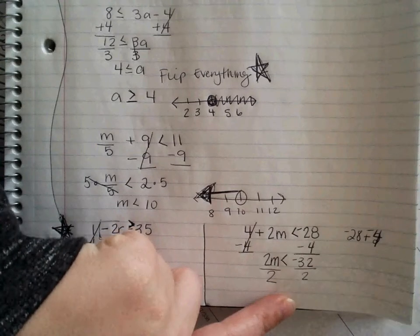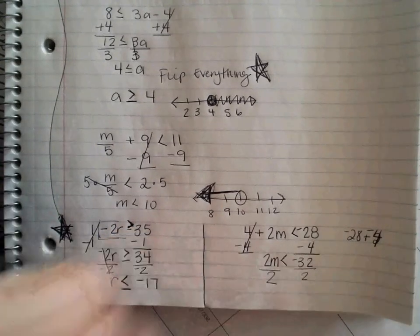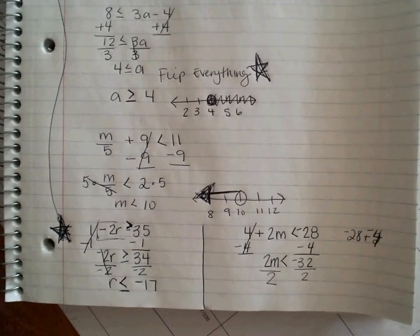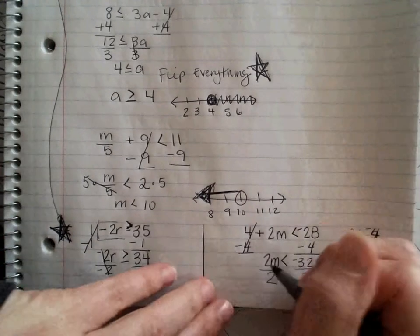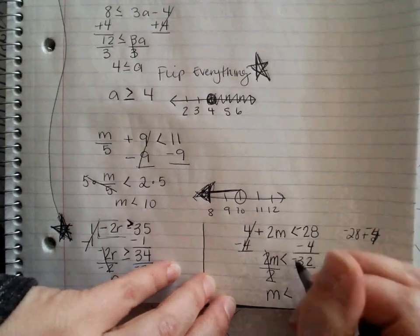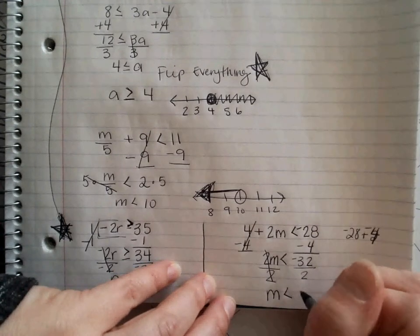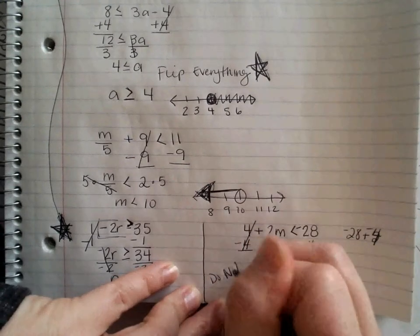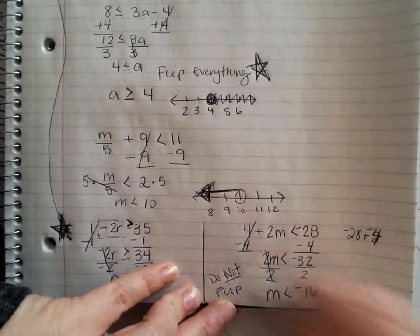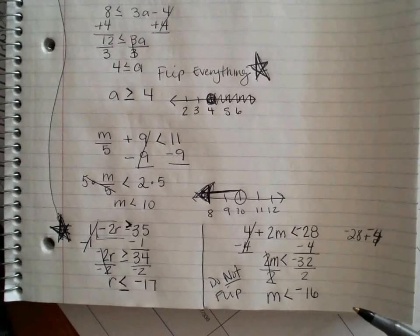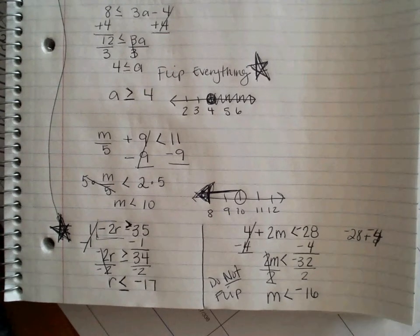I'm going to divide by 2 on both sides. Now, some of you may ask, why am I not going to flip this? I'm dividing by negative. I did not bring a negative over. Only when you bring a negative over are you going to flip it. So, this still says M is less than negative 32 divided by 2 makes negative 16. I do not flip for this one because I did not bring a negative over.